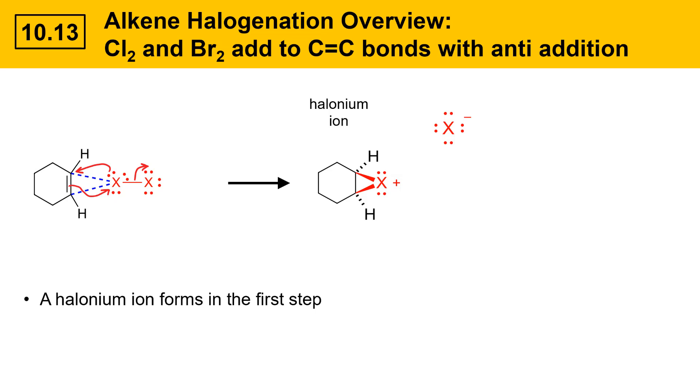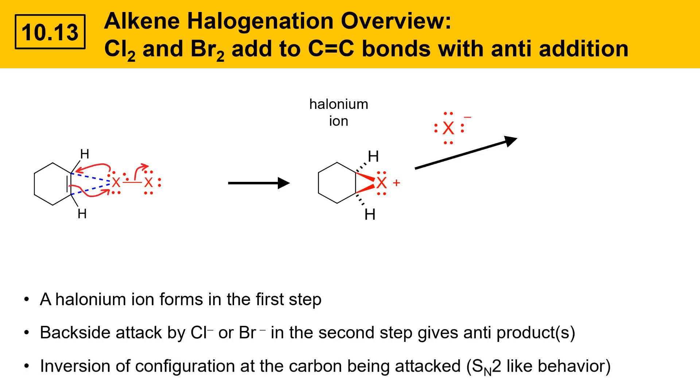The halonium ion has partial positive character at the two carbons of the three-membered ring, both here and here. And the halogen can function as a nucleophile and attack each one of them. Backside attack by either chloride or bromide in the second step gives anti-products. An inversion of configuration occurs at the carbon being attacked. This is SN2-like behavior.